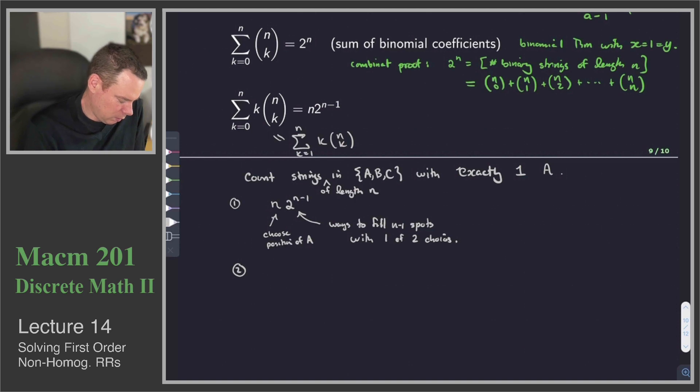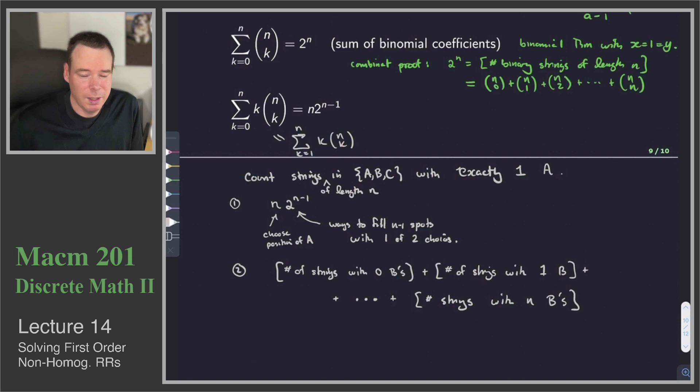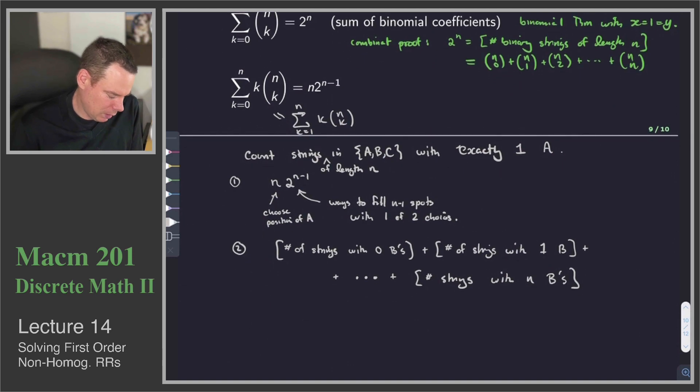So ways to fill n minus 1 spots with one of two choices. So that's really just a binary string problem at that point. And that's the right-hand side of the equation. So how do we get the left-hand side of the equation? Well, what we'll do is we'll count the number of strings. And I won't say, you know, of length n with exactly 1 a, because those are the things we're counting. So number of strings with 0 b's plus the number of strings with 1 b and so on, all the way down to the number of strings with n b's. And you might argue that, well, you can't have n b's, because one of those slots has already been chosen for an a. And that's fine, yeah, it just means that the number of strings here would be 0, and we'll get that in our count.